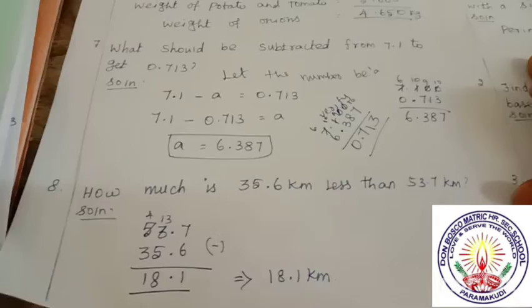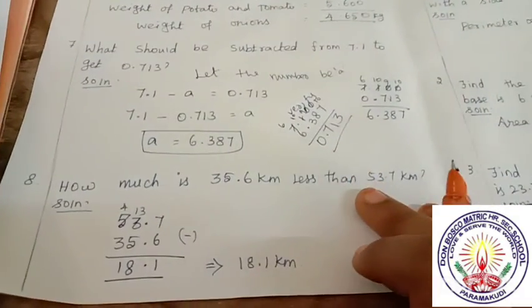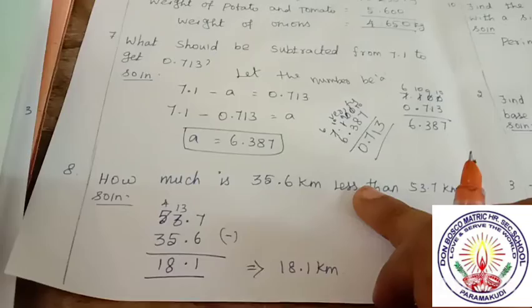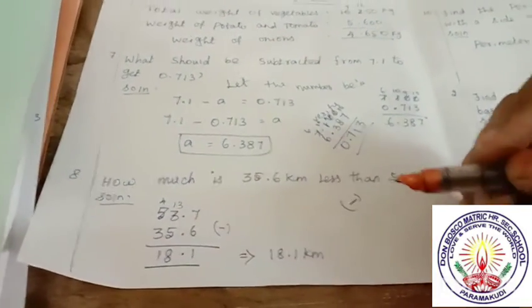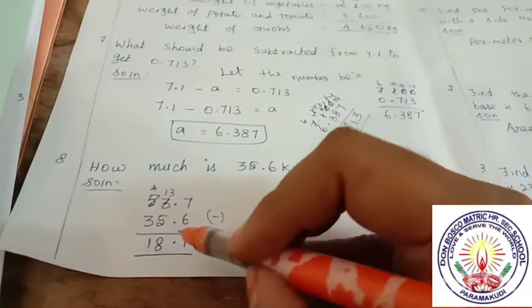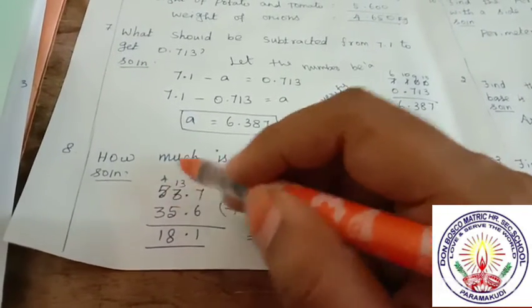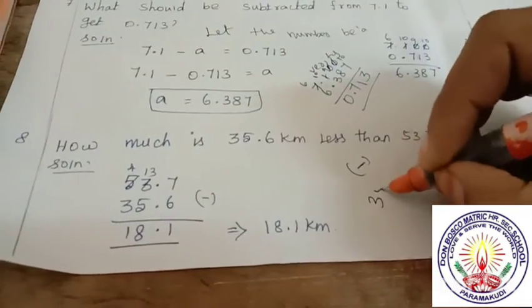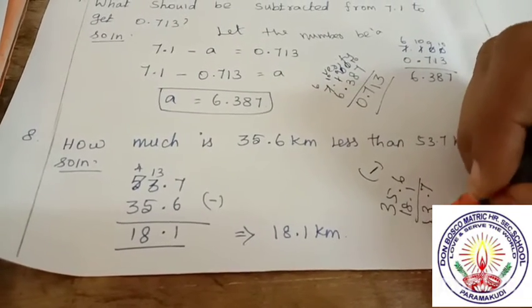Eighth sum: How much is 35.6 km less than 53.7 km? Less than is subtracted. 53.7 minus 35.6. 7 subtracted 6 is 1. 13 subtracted 5 is 8. 4 subtracted 3 is 1. Therefore 18.1 kilometers.